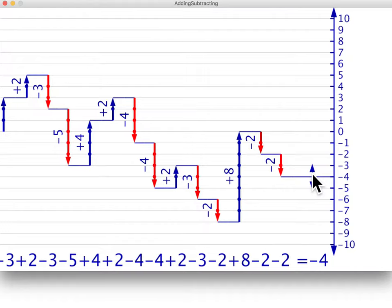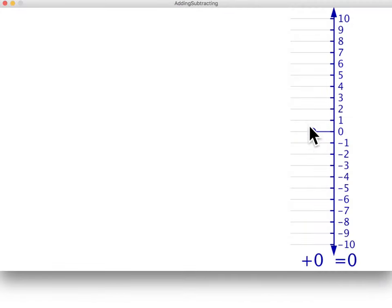Let's start with the familiar positive numbers by considering the equation two plus two plus three equals seven.